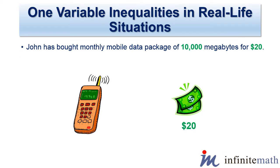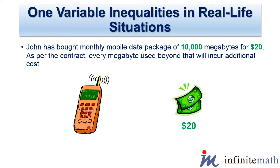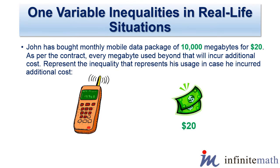John has bought a monthly mobile data package of 10,000 MB for $20. As per the contract, every MB used beyond that will incur additional cost. Represent the inequality that represents his usage in case he incurred additional cost.